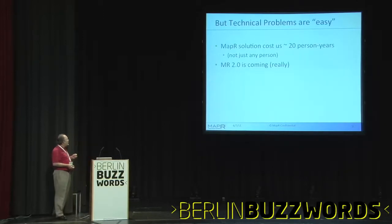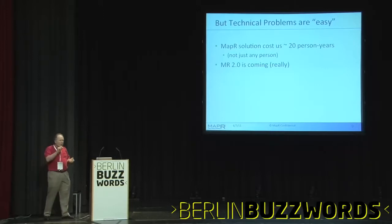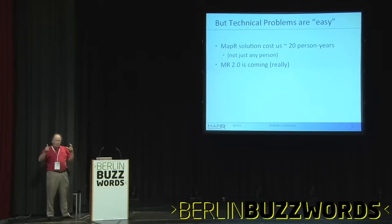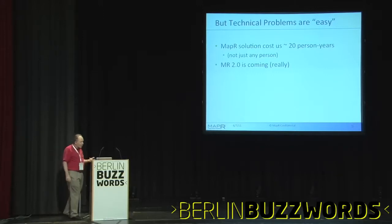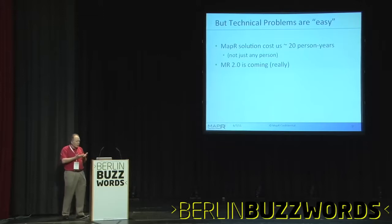Technical problems are easy. The particular technical problem I work on costs 20 man-years of work — that's money; somebody writes a check. Check-writing scales very well in time. The cost to add a zero to a check is not very long. And we can convince people to write these checks. MapReduce 2.0 is coming, so the technical problems really should be solved not so long from now.